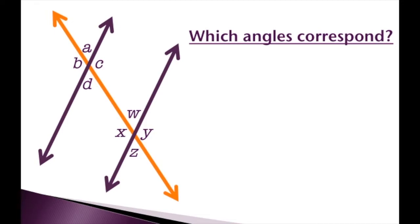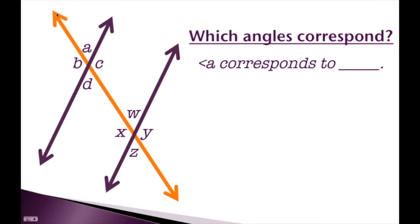Let's see if we can tell which angles correspond. Angle A corresponds to what angle? First, identify the parallel lines and the transversal. This line and this line are our parallel lines, and this line is our transversal. We have angles A, B, C, D on one side and W, X, Y, Z on the other. Angle A is our top left angle here, so we need the top left angle on the other side — that's angle W. So angle A corresponds to angle W.